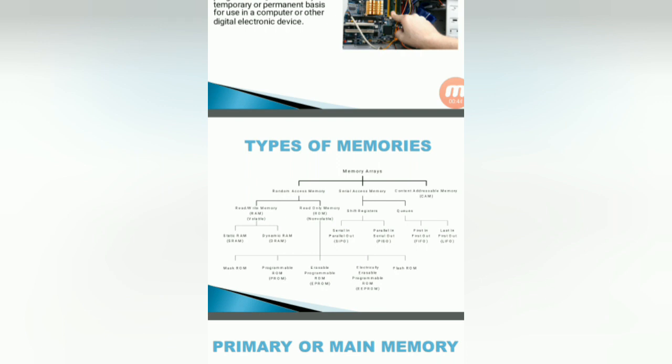Random access memory is divided into two parts: read and write memory, that is nothing but RAM memory, which is volatile memory. And read-only memory, ROM, is a non-volatile memory. ROM is also divided into four different types: programmable ROM, erasable programmable ROM, electrically erasable programmable ROM, and flash ROM.